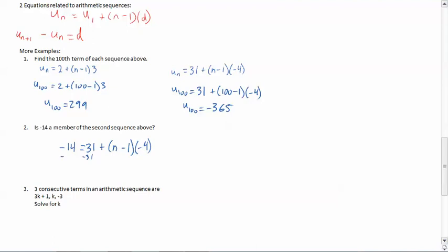So solve away. We'll subtract the 31, which will give us negative 45, which then will be equal to n minus 1 times negative 4. Now at this point, you can either distribute the negative 4 and work with it from there, or we can just divide both sides by negative 4, which is what I'm going to do because it looks like it'll be a little easier. So I divide negative by negative, which is positive. So 45 over 4, I'm going to leave it as a fraction because that doesn't divide evenly, equals n minus 1.